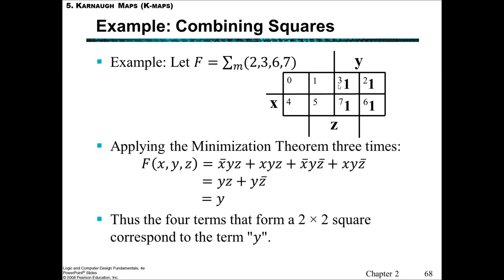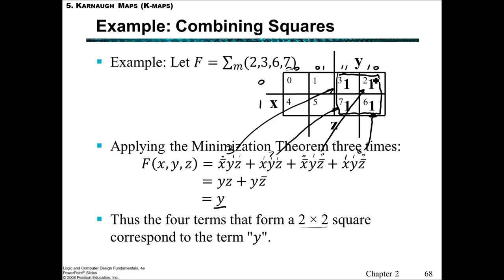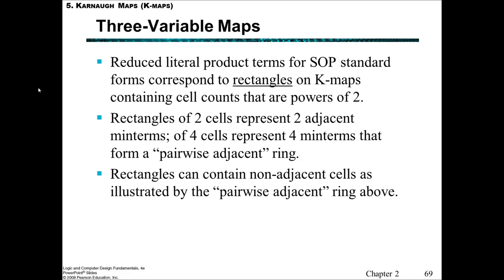Let's do an example with minterms 2, 3, 6, 7. We write ones in the squares with those indexes. We could apply the minimization theorem — using Boolean algebra, reduce it down to one literal. We can also notice these form a 2×2 square. If we draw a square around it and look at what's the same: Z is changing, X is changing, but Y is staying as 1. Drawing a square around there tells us we can simply write Y. We don't have to do the minimization algebraically.